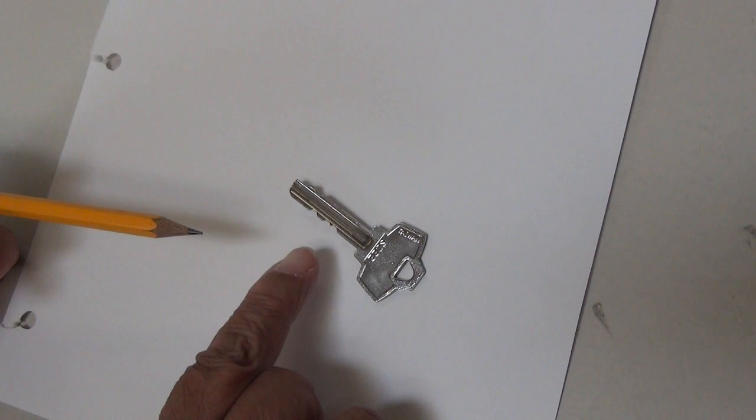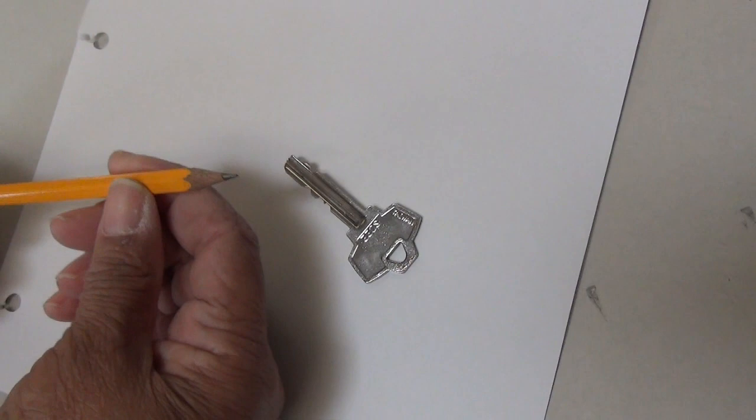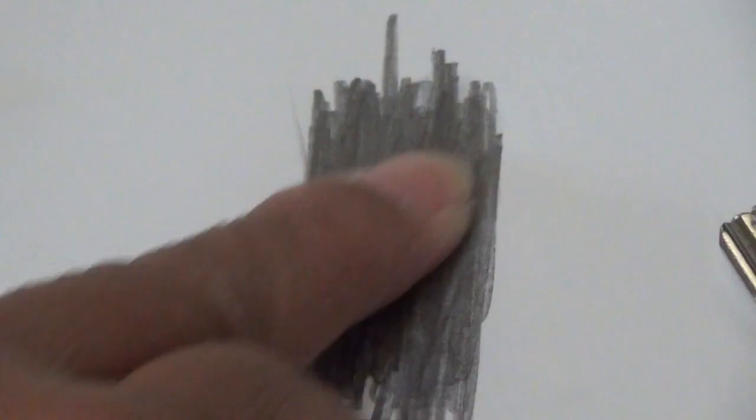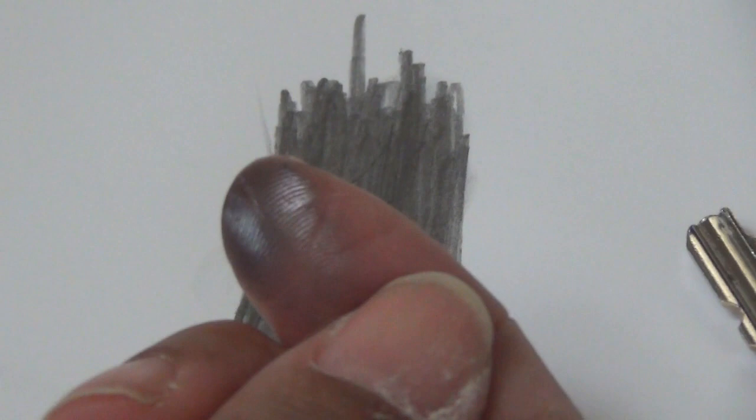So the solution to a key that gets stuck in the lock is graphite. And a pencil lead is made of graphite. Now, what I'm gonna do is, I'm gonna just scribble here a little bit, because I want you to see this. Now graphite is very, very shiny. I don't know if you can see it on a piece of paper, but look at my finger here. It's shiny and slick.